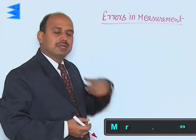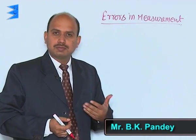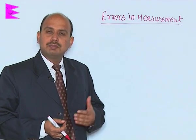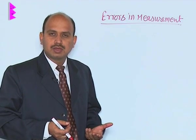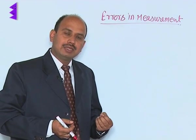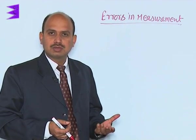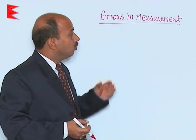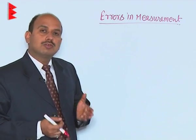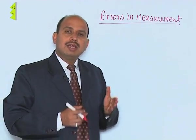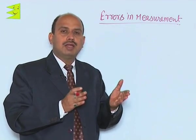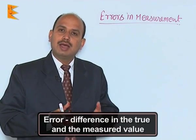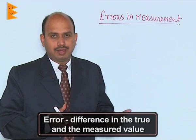Errors in measurement is the next part of unit 1. Measurement is the essential process of comparison — any physical quantity is compared with a standard unit that has the same nature as the quantity. When you are measuring something, sometimes there is a difference between the true value and the observed value. The error is the difference between the true value and the measured value.